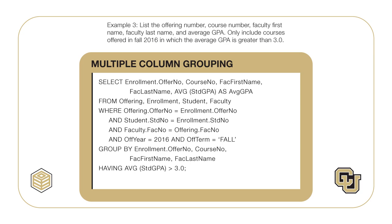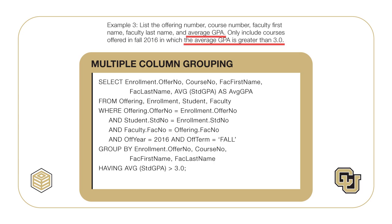For the second question on combining the tables, the faculty and offering tables must be joined on faculty number using a primary key and foreign key condition. The offering and enrollment tables must be joined on offer number using a condition with the primary key and foreign key of the tables. The enrollment and student tables must be joined on student number using a condition with the primary key and foreign key of the tables. For the third critical question on individual rows versus groups of rows, groups of rows are needed because the result includes average student GPA and a condition involving the average student GPA.